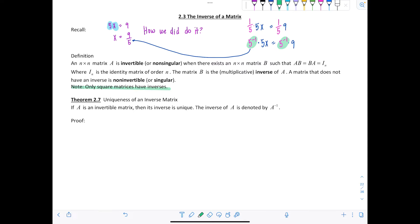First let's talk about a very important theorem 2.7, which discusses the uniqueness of an inverse matrix. The theorem states that if A is an invertible matrix, then its inverse is unique. The inverse of A is denoted by A raised to the negative first power.